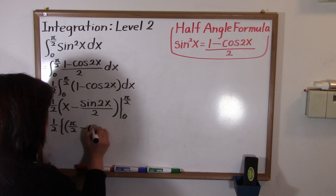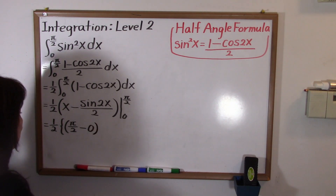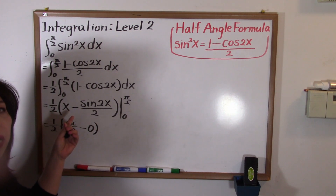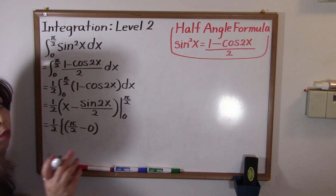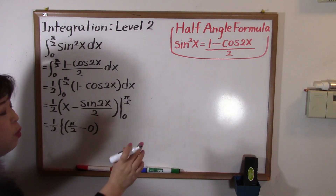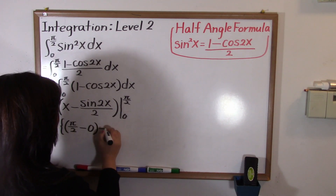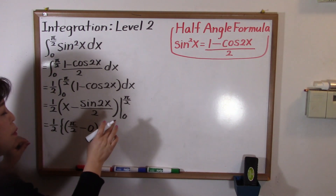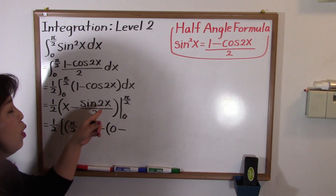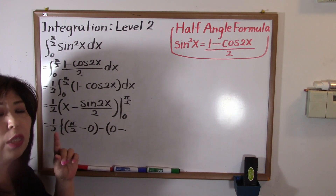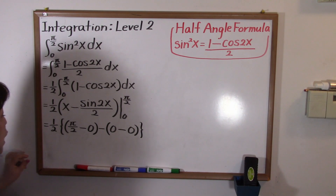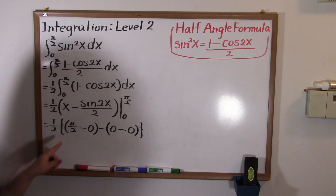Sine of two times pi over two is sine pi, and sine pi is zero. So the upper limit term becomes pi over two. Then we subtract the value at x equals zero: zero minus sine of two times zero, which is sine zero, which is also zero. So that term is zero.